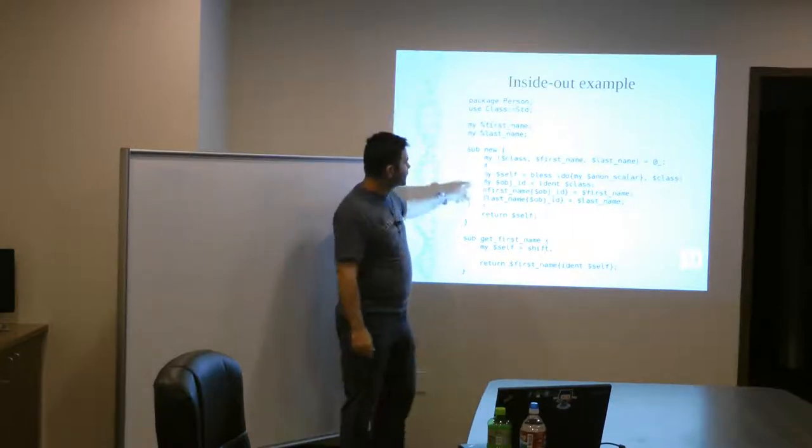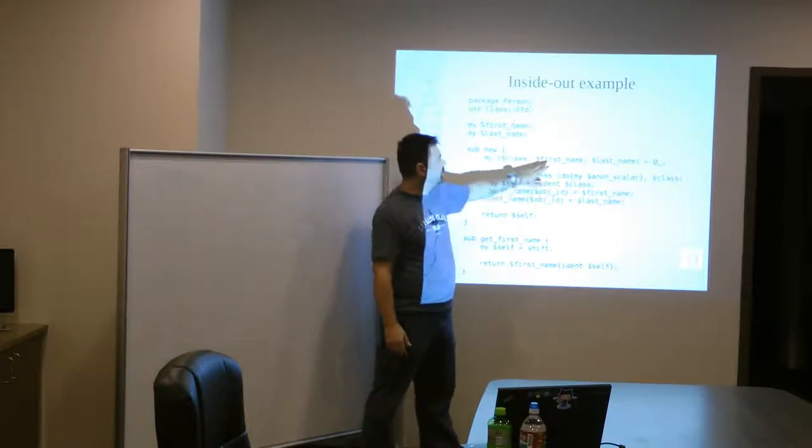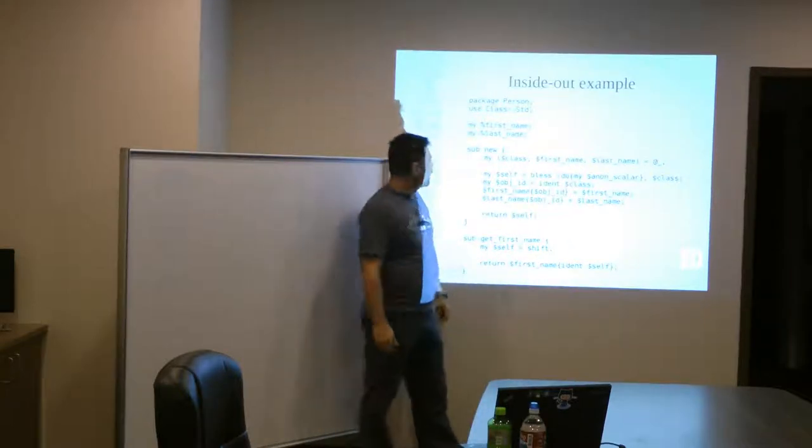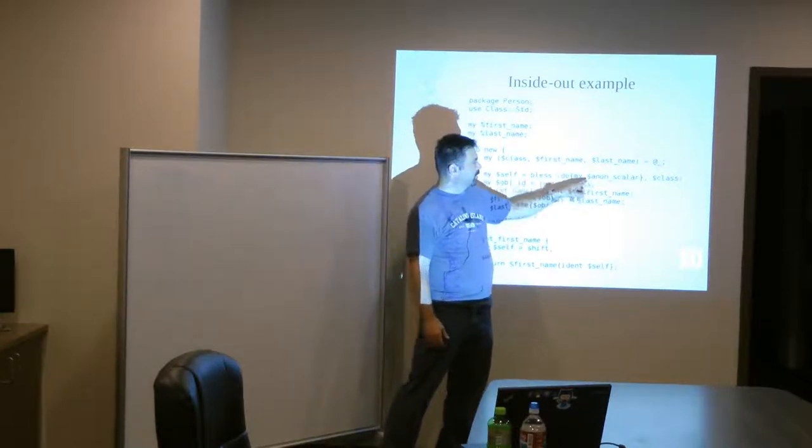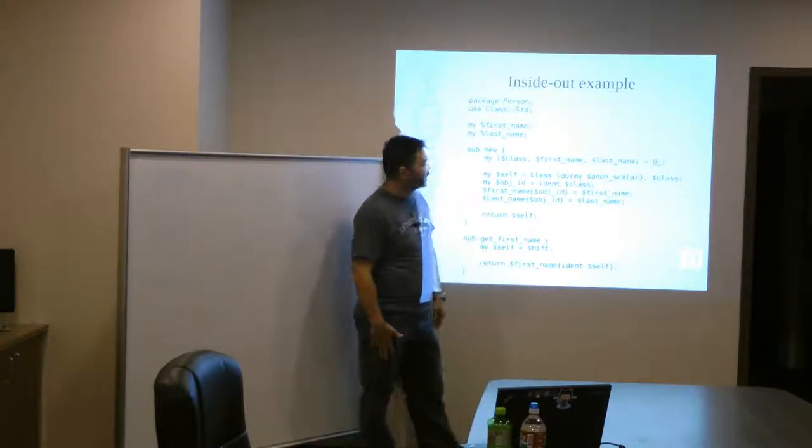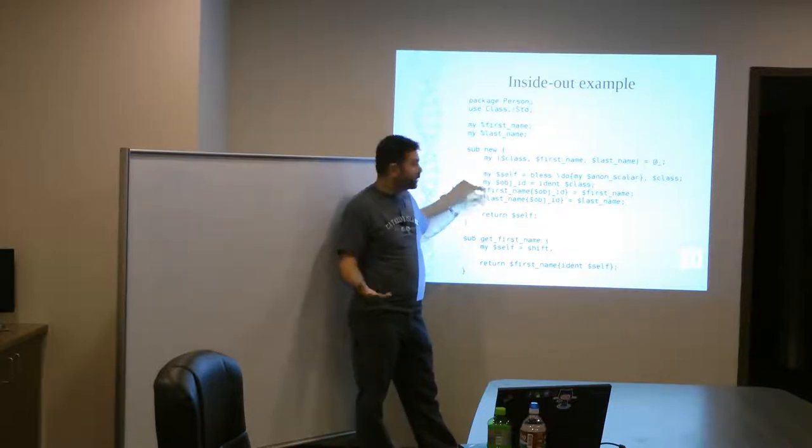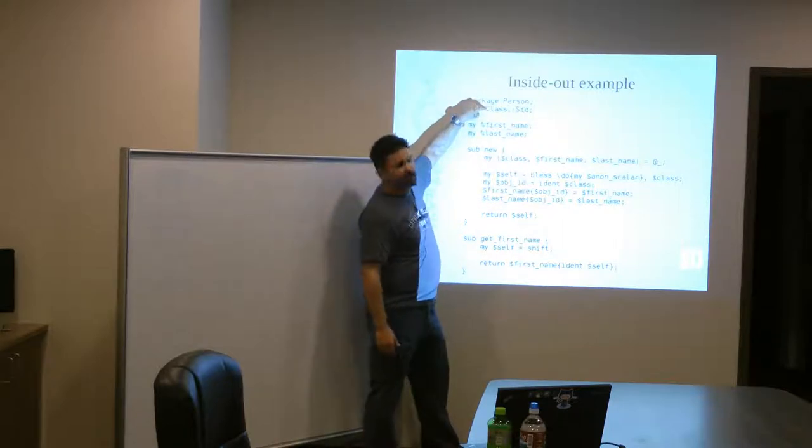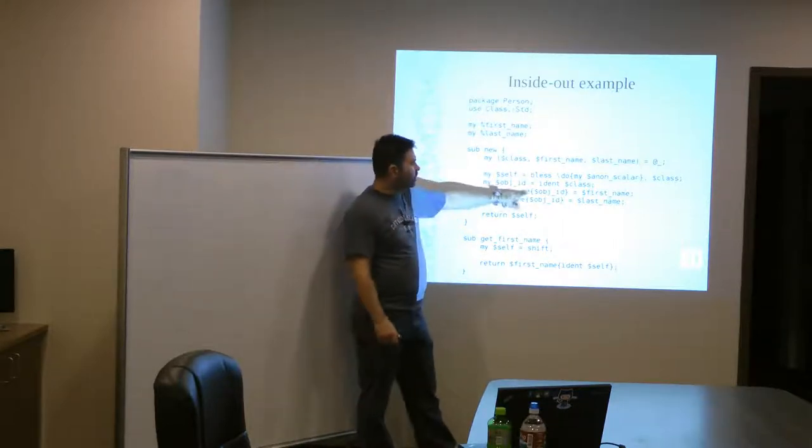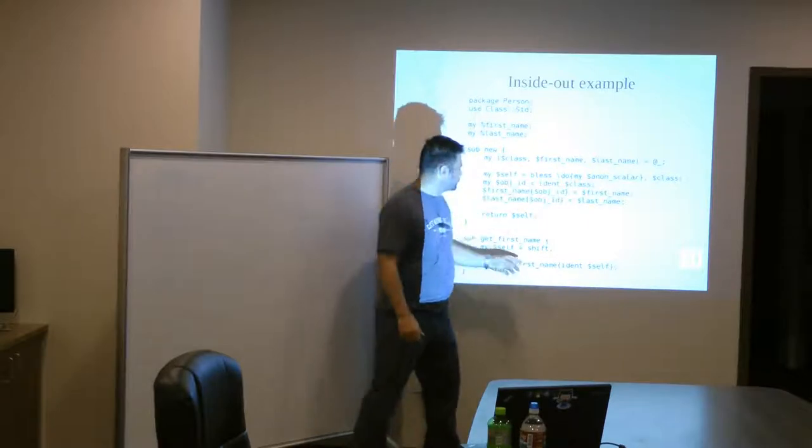So, here we have this, this constructor. It takes a class name, just like our standard Perl 5 objects do. You pass in a first name and a last name. And then it does the whole self thing. It does a little differently. It's got this do, and it puts in this scalar thing. I'm not really going to talk about that. You can read the class STD and find out what's going on there. But, essentially, all we're doing is just blessing an anonymous hash, just like we did with the regular Perl 5 objects. And then, we get an object ID by calling ident. Ident comes from class STD. And that gives us the unique ID. And then we can populate these hashes with the values that were passed in. And then we return self.